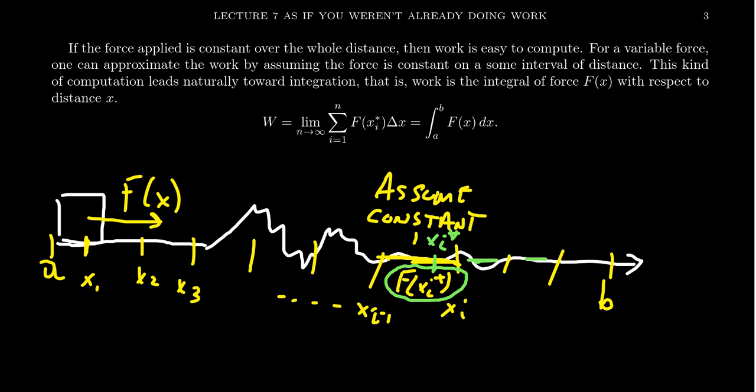In which case, then the work, the work of pushing it from, we'll call this the work wi, the work from pushing it from xi minus 1 to xi would then be the force, which as we're assuming it's constant, it would be f of xi star. And then we times it by the distance. How far do you have to go?